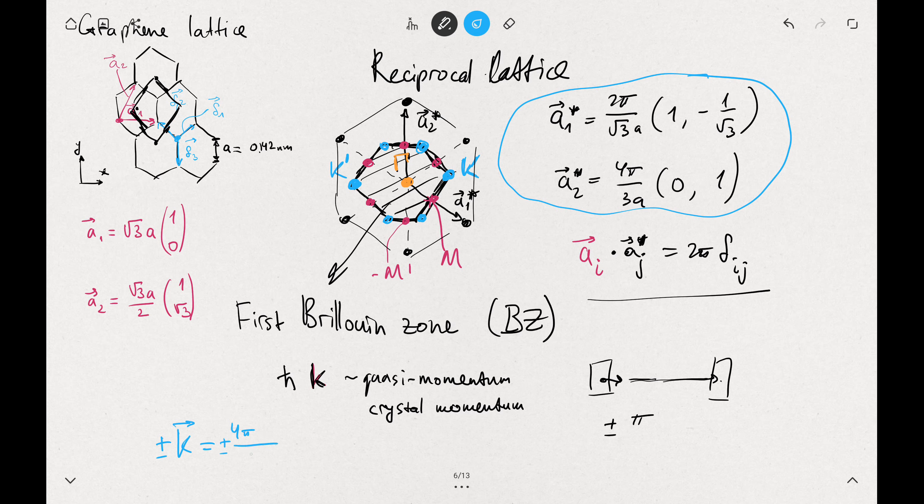We have 4π over 3√3a, using that notation it's (1, 0).